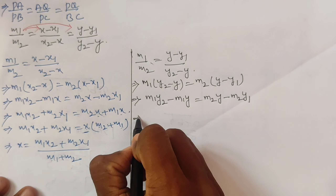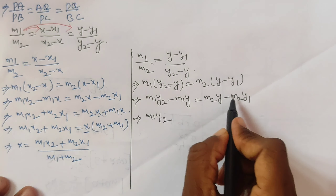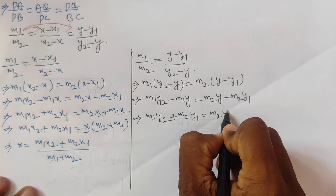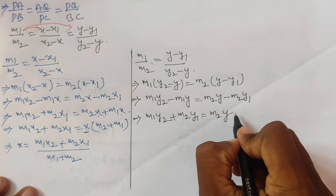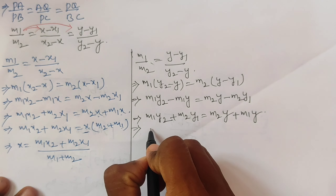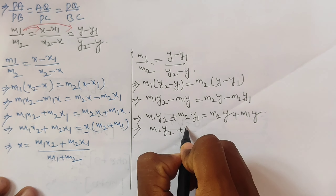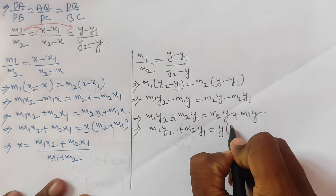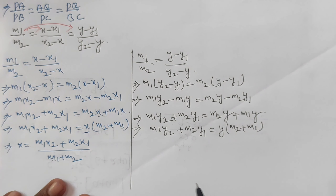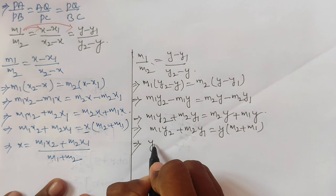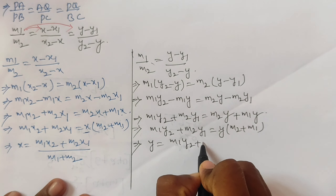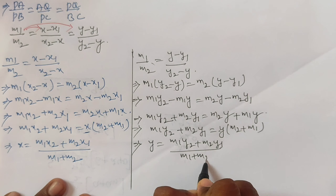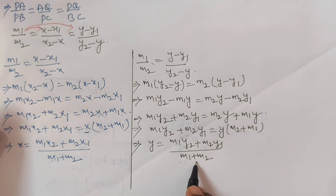Transposing minus m2·y1 to the LHS gives plus m2·y1, and transposing minus m1·y to the RHS gives plus m1·y. So m1·y2 plus m2·y1 equals y(m2 plus m1). Therefore y equals (m1·y2 plus m2·y1) divided by (m1 plus m2).